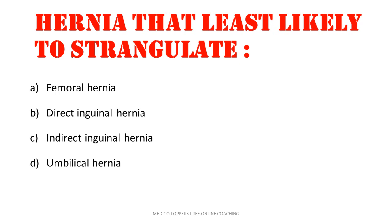Hernia that is least likely to get strangulated. Options: femoral hernia, direct inguinal, indirect inguinal, umbilical hernia. The least likely one is direct inguinal hernia.